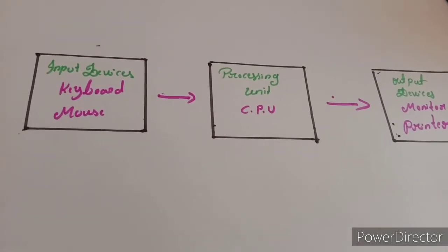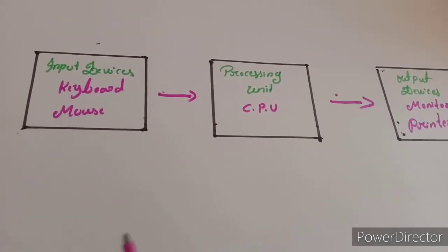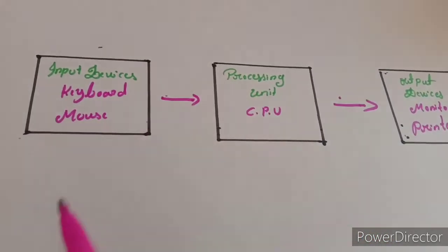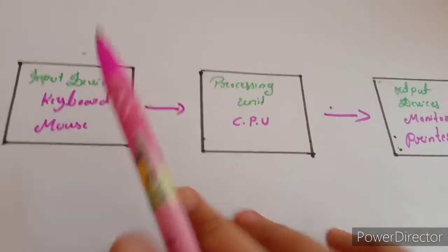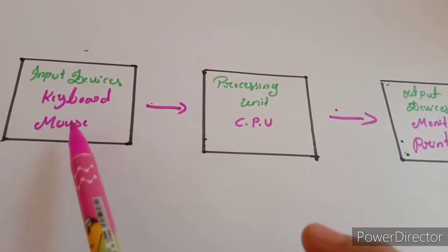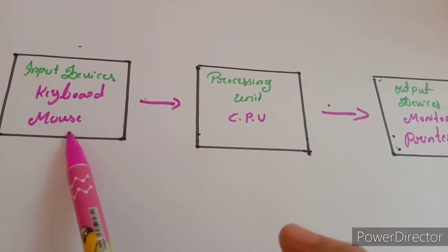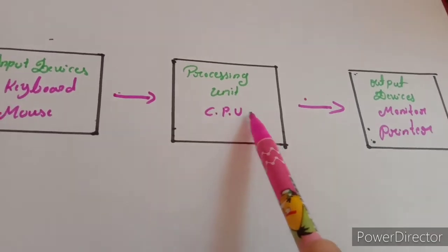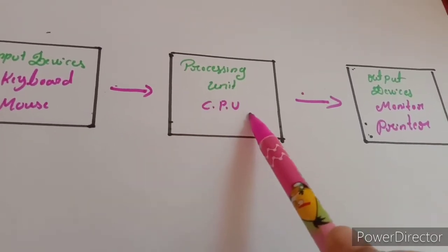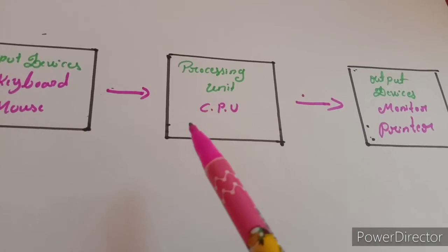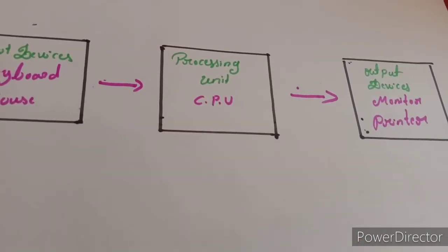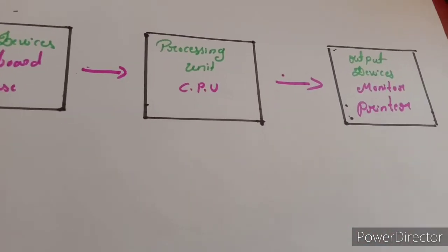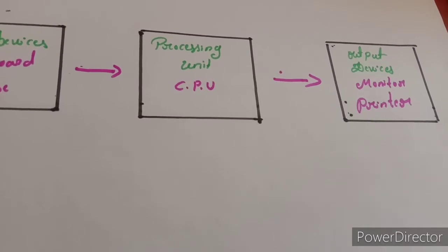In a computer, the keyboard and mouse are used to enter data and instructions into the computer. Hence, they are input devices. The two input devices are keyboard and mouse. The processing unit is the CPU — Central Processing Unit. The CPU is the brain of the computer. It processes data according to instructions and generates information.